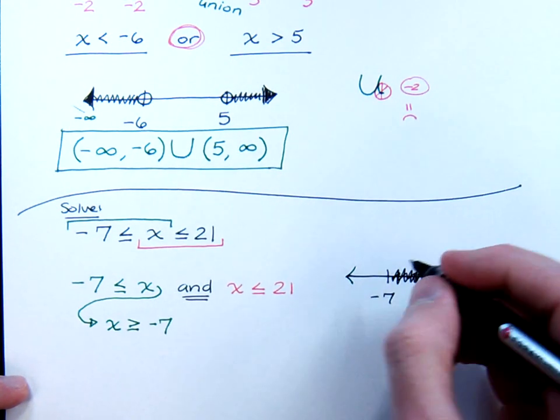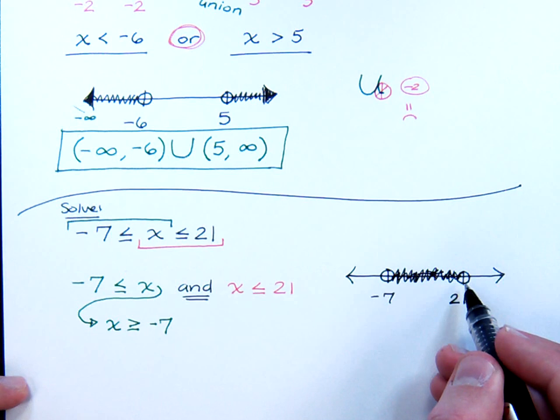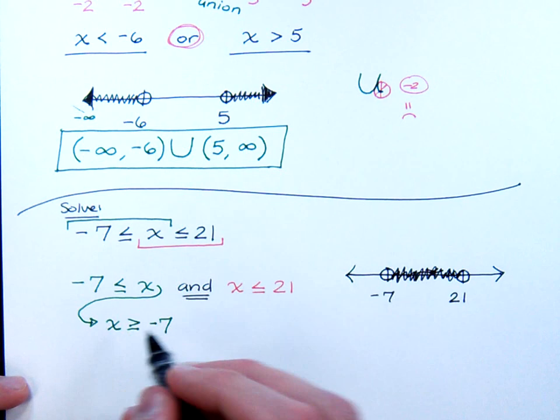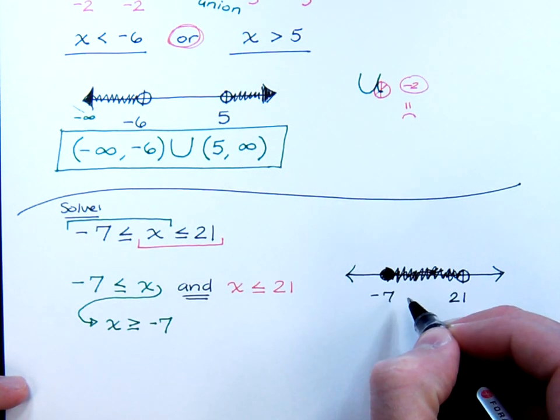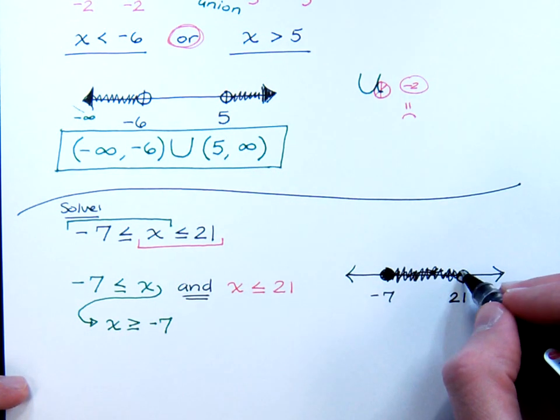But now you have to figure out what you're going to do at these endpoints. Well, look at the inequality. It says x is greater than or equal to, so that means you get to be equal to this, so it gets to be filled in, just like that. The other one says x is less than or equal to. Since you get to be equal to, you again get to be filled in, just like that.